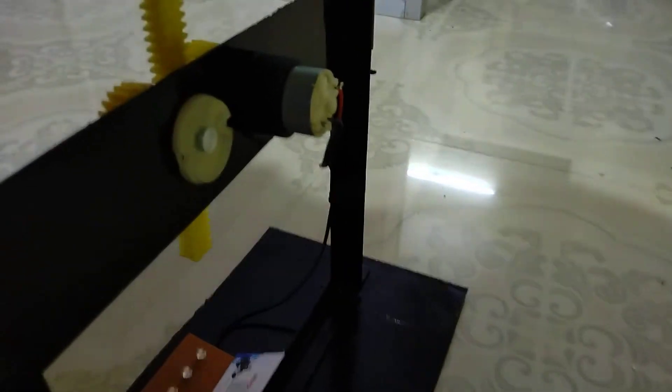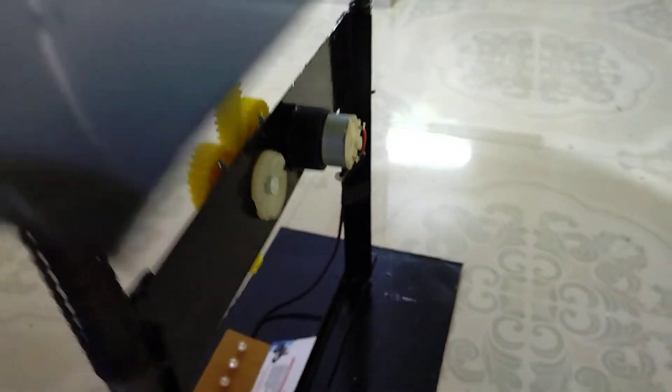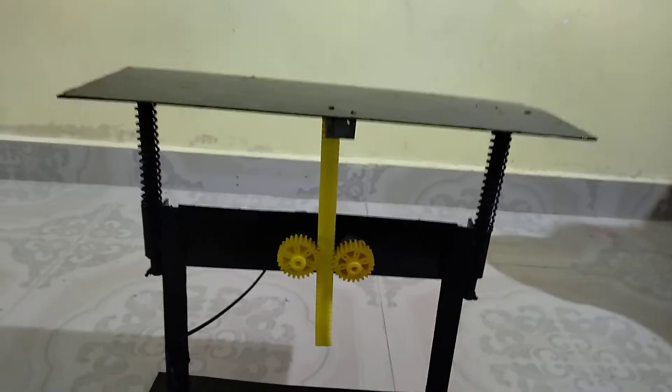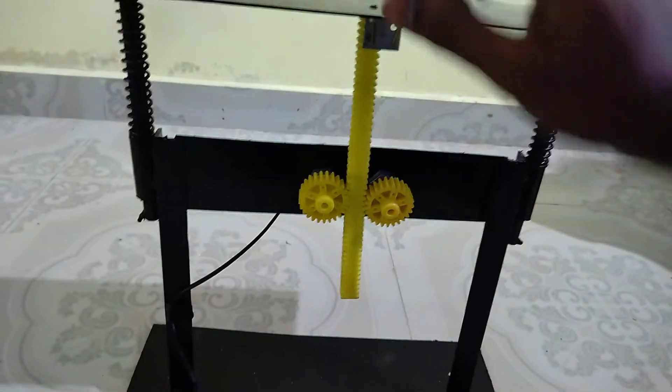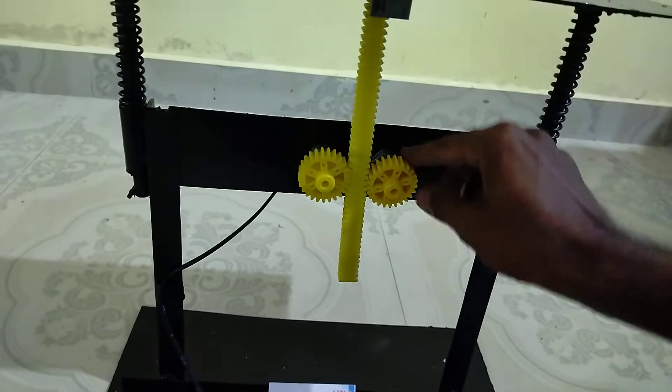This is the DC motor. This DC motor acts as a dynamo. When the pressure is applied on top of the plate, this pinion setup will rotate the gear setup.